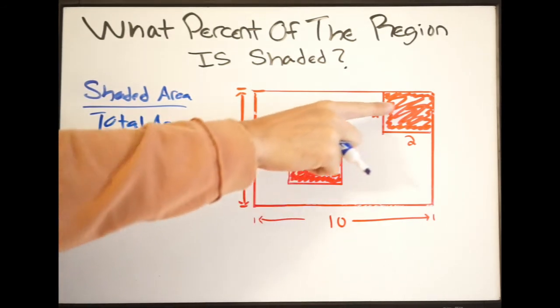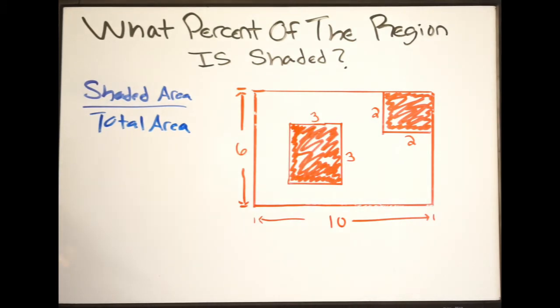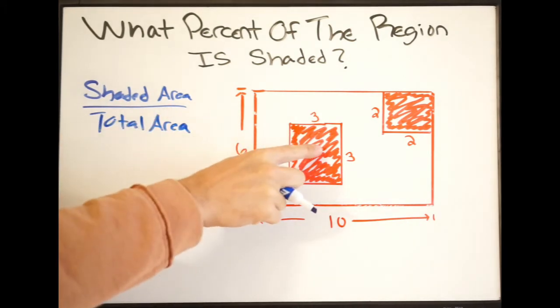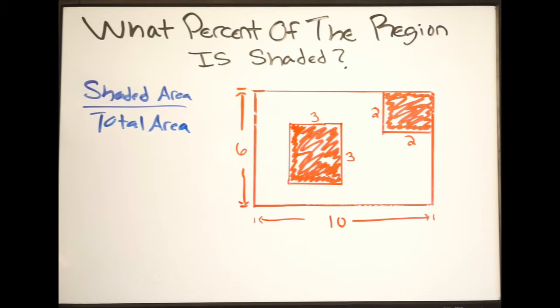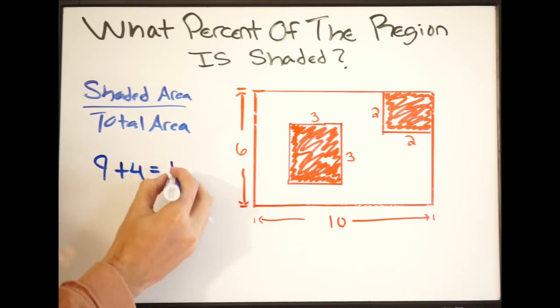Well, I have it here and here. So to do this, I'm simply just going to find the area of this square and this square. So it's going to be 3 times 3, which is 9. And then 2 times 2, which is 4. So that's going to be my total shaded area. So 9 plus 4 is going to give us 13.